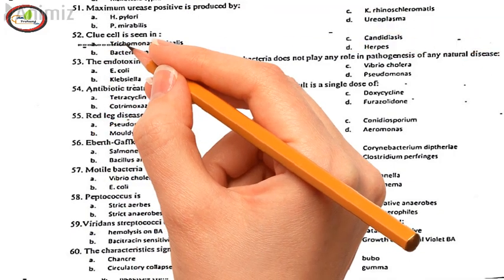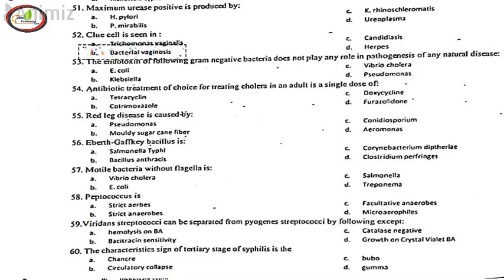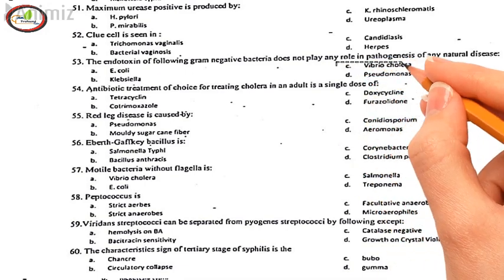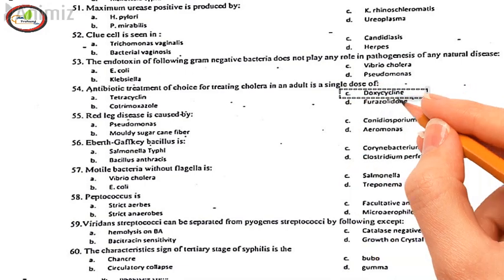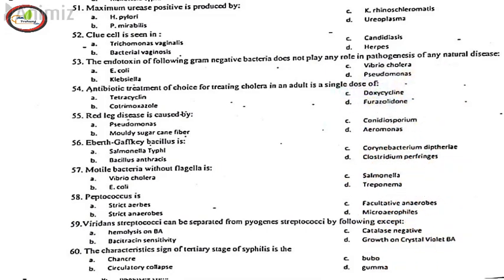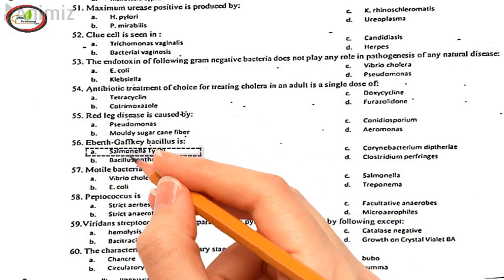52. Clue cells, B. Bacterial vaginosis. 53. The endotoxin of the following gram-negative bacteria does not play any role in pathogenesis of any natural disease, C. Vibrio cholerae. 54. Antibiotic treatment of choice for treating cholera in an adult is a single dose of, C. Doxycycline. 55. Red leg disease is caused by, D. Aeromonas. 56. Eberth-Gaffky bacillus is, A. Salmonella typhi.